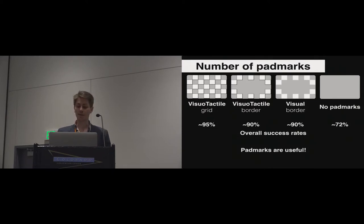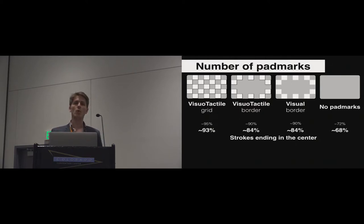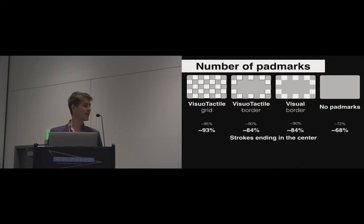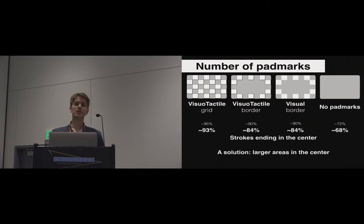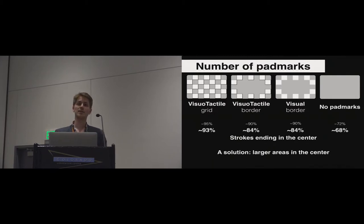If we look in more detail at the experiment results, focusing only on strokes ending in the center of the touchpad, we can see that without pad marks in the center, the success rates are a bit lower. But a solution for that is to use larger areas in the center, so the user can still be accurate without the need of pad marks to guide them. These are the two lab experiments showing that our concept can be used with a guide.